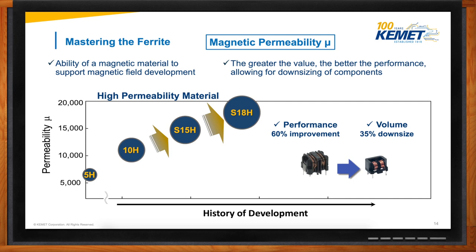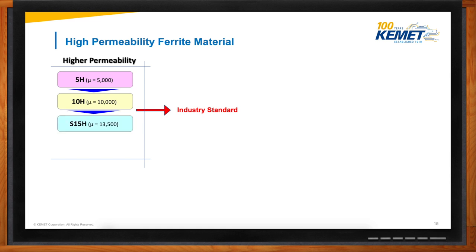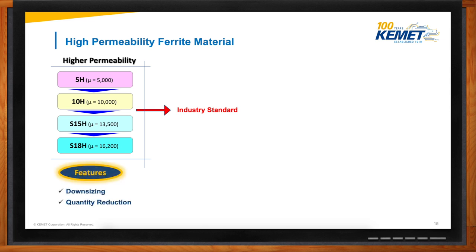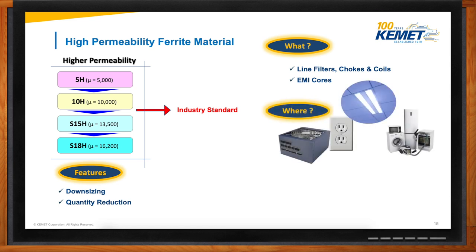Let's make it more visual. We're talking about making it smaller while keeping or even improving performance — that's really important for miniaturization. The industry standard is about 12,000 mu, and we were going further. Quantity reduction means fewer pieces on the board. The products we use for that are line filters — also called chokes or coils — as well as EMI cores. These are used in white goods, consumer goods, lighting, and industrial applications. Simply put: whenever you need to plug something into the wall on AC, you will need one of these.